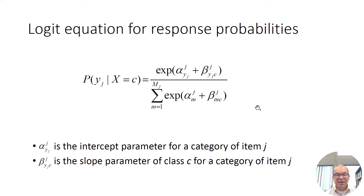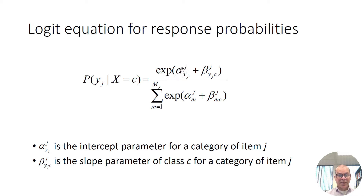Let us look at the form of a logit equation for the response probabilities — the probability of a given response conditional on class membership. The equation contains terms alpha and beta. The alpha and beta are summed and then exponentiated, which means raising the number e to that power. The alphas are intercept terms that vary across items, so every indicator has its own intercept terms, and they vary across categories of the indicators. The betas are slopes indicating how strongly the latent classes are related to the indicators, with a different slope parameter for every combination of indicator category and latent class.